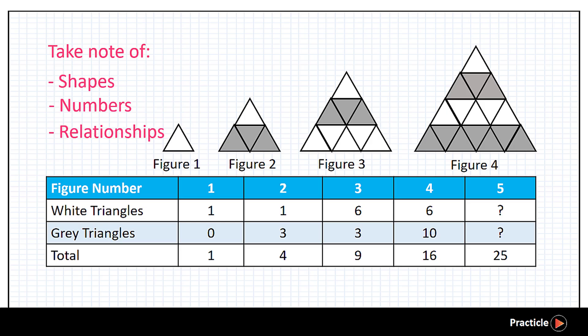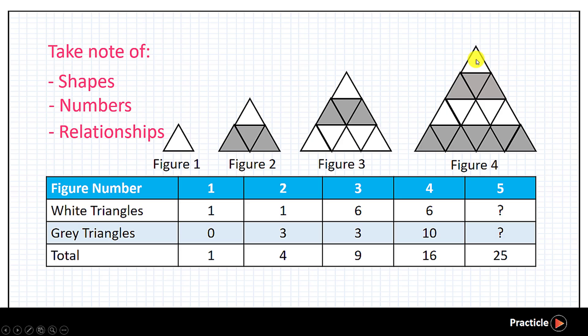So first of all, let's see what shapes we have. Looks like we have triangles of the same size stacking up, and there seem to be two kinds of triangles here — the white ones and the grey ones. The colours of the triangles appear to take turns in each row. We have a white triangle in row 1, followed by grey triangles in row 2, and then white triangles appear again in row 3, and so on. So that's it for the colours.